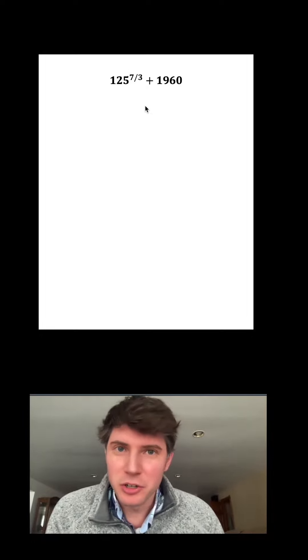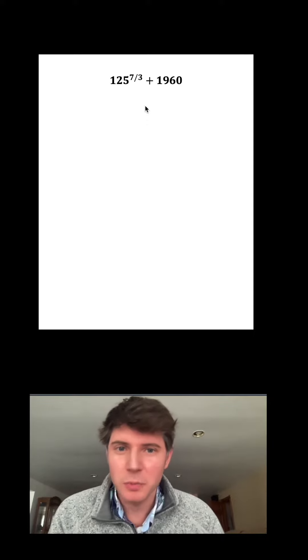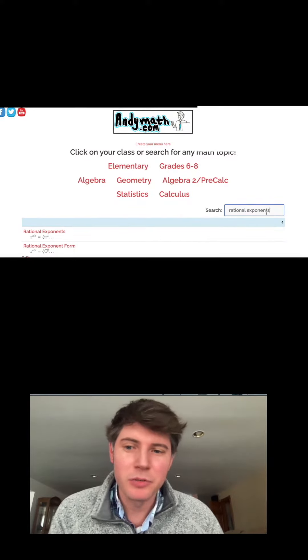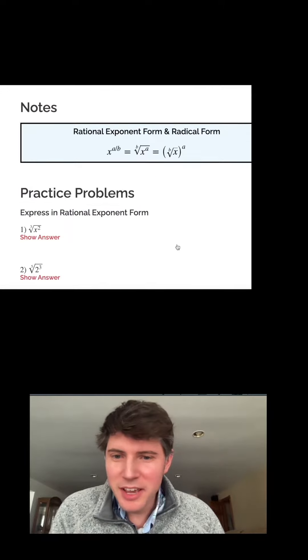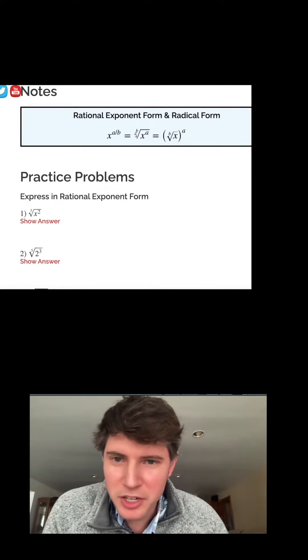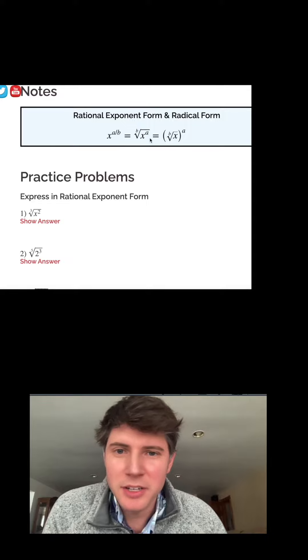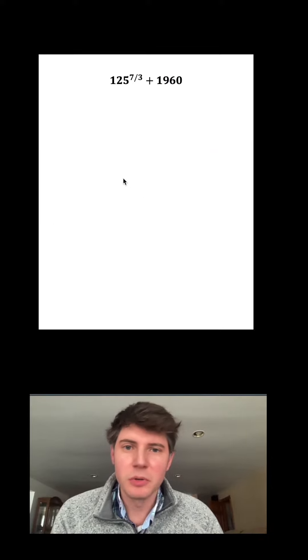Since 7/3 is a fraction or ratio, it's called a rational exponent. If we go to andymath.com and type in rational exponents, we'll see this rational exponents form. What it says is the bottom part of your fraction is the root and the top part is the exponent.